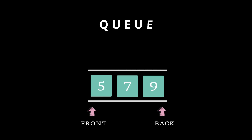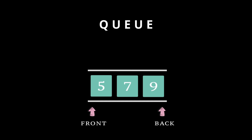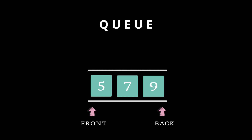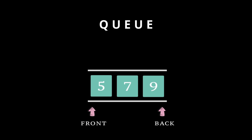In programming, a queue is an ordered collection of elements where the addition of a new element happens at one end, which is known as the rear or back of the queue. And the removal of elements occurs at the other end, which is known as the front of the queue. It follows the FIFO principle, which stands for first in, first out — so the first one to come would be the first one to get out of the queue.